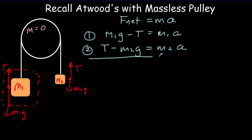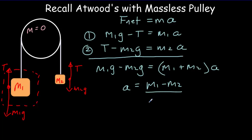We then could add these two equations, and we got that M1g minus M2g must equal M1 plus M2 times A. And then we could solve for the acceleration of the system, and it's going to equal M1 minus M2 divided by M1 plus M2, all times g. So the acceleration would always be some fraction of the acceleration due to gravity.